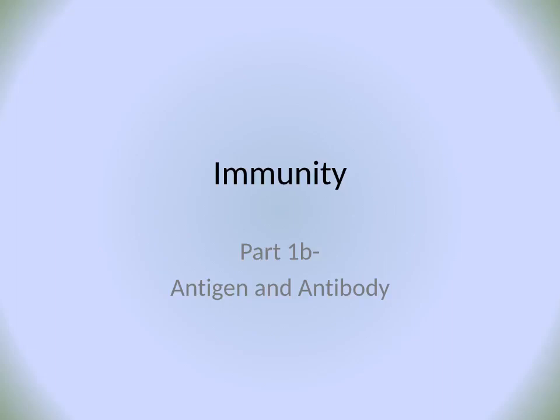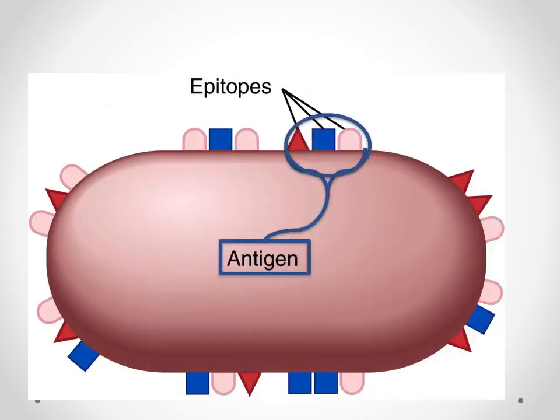Let's take a look at antigens and antibodies. How can we go about telling self from non-self? That's the real key in the immune system — how can we make sure that we're doing what we need to do against pathogens, while allowing our body not to attack itself? And that's where it falls down to the antigen.